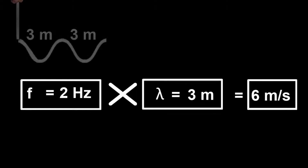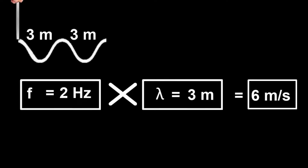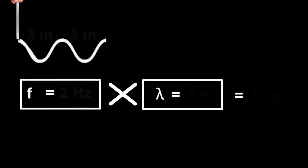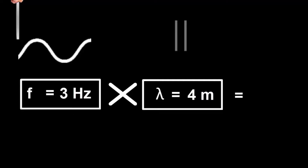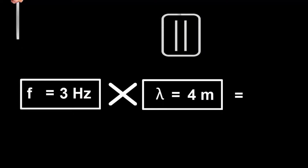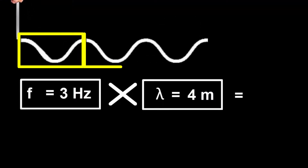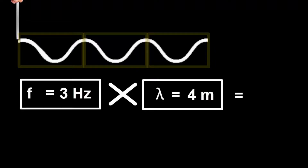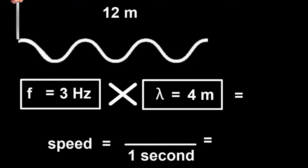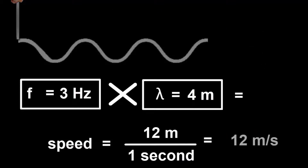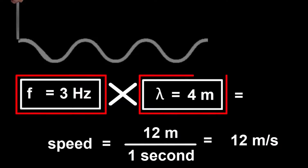But this is just one example. Would multiplying frequency and wavelength work for other waves too? Let's try a frequency of three hertz and a wavelength of four meters. Three hertz means there will be three waves, and each will be four meters long, so 12 meters altogether. The speed must be 12 meters divided by one second, or 12 meters per second. We could have skipped to the answer by just multiplying the frequency by the wavelength — three hertz by four meters. It worked again.